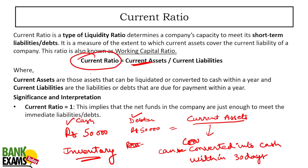So what is the current ratio? Current ratio measures your ability to pay back your debts — the company's capacity to meet its short-term liabilities. For example, if your EMI is 20,000 rupees but you only have 10,000 rupees in your account, you are not able to pay your loans. Current ratio is a liquidity ratio that determines a company's capacity to meet its short-term liabilities. The formula is: Current Ratio = Current Assets ÷ Current Liabilities.